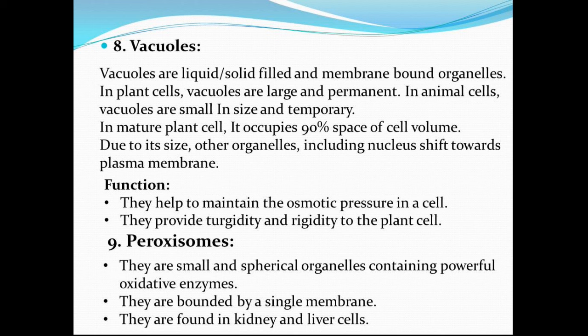In a mature plant cell, the vacuole occupies about 90% of the cell volume, and because of its size, other organelles including the nucleus shift towards the plasma membrane. Vacuoles are absent from prokaryotes. They are small in size but many in number in animal cells, while the plant cell has one single large central vacuole. The vacuole is formed of an outer limiting membrane called the tonoplast, and the liquid inside it is known as cell sap. Cell sap exerts an outward turgor pressure, while the vacuole acts as a storage site for water, minerals, toxic metabolites, etc.